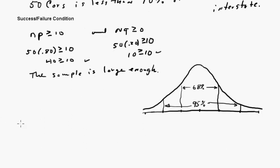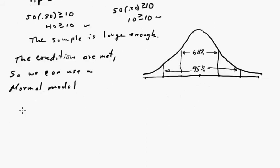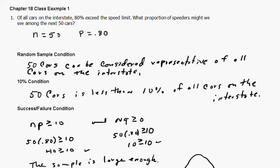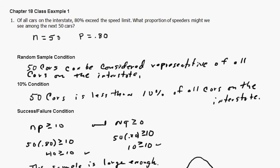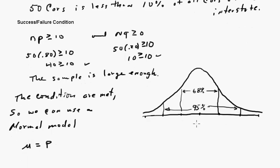Now we can use the models. We can say something like, the conditions are met, so we can use a normal model. So the mean of the model, mu, is just going to be P, the center. We're saying 80% exceed the speed limit. So 80% is going to be right here, 0.8.